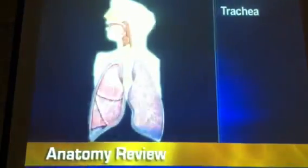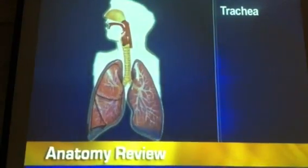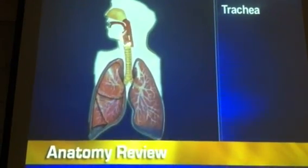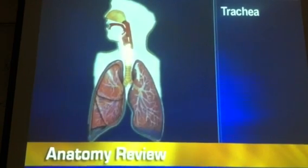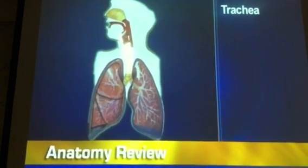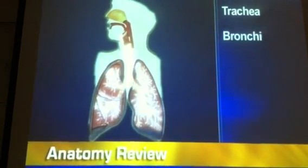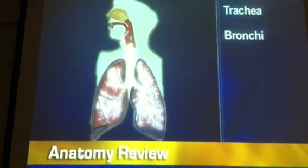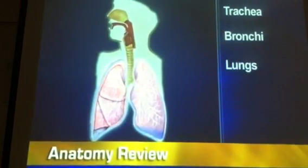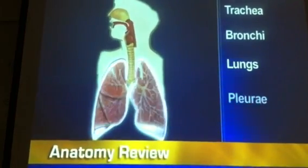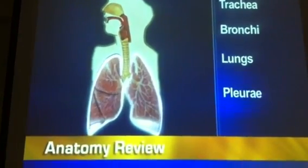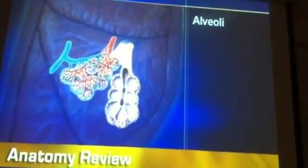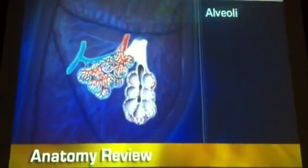Within the thorax, the trachea extends from the cricoid cartilage to the sternal angle, where it bifurcates into the right and left main bronchi. The bronchi lead to the lungs, which are surrounded by the parietal and visceral pleura, and contain millions of alveoli that cluster like grapes around each alveolar duct.